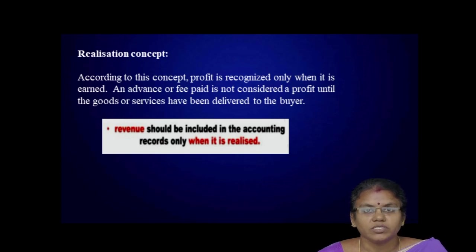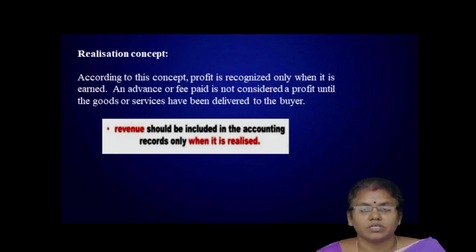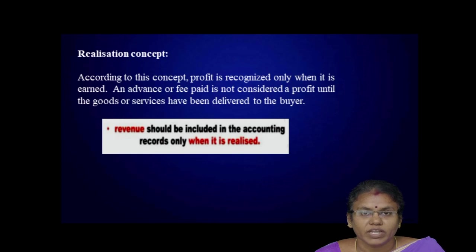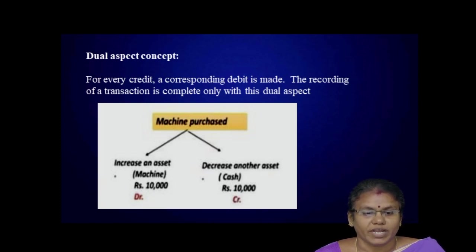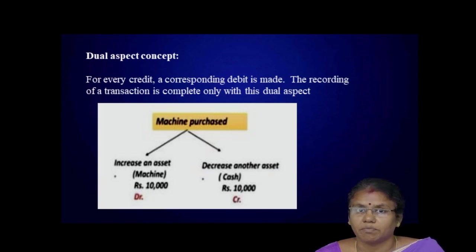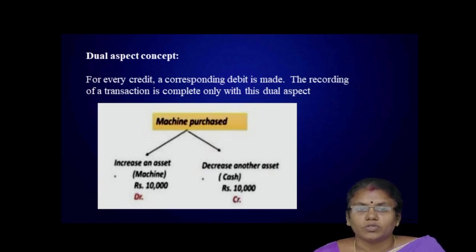Realization concept: according to this concept, a profit is recognized only when it is earned. An advance or fee paid is not considered a profit until the goods or services have been delivered to the buyer. Revenue should be included in accounting records only when it is realized — that is, converted into cash. Dual aspect concept: for every credit, a corresponding debit is made. For example, salary paid — debit the salary account and credit the cash account.